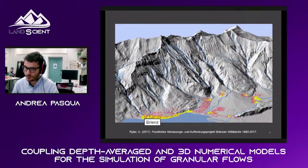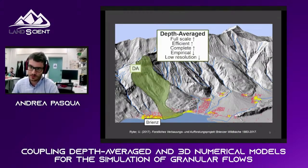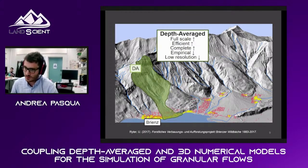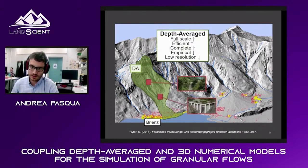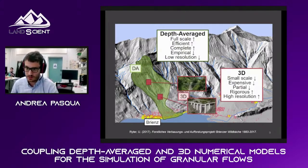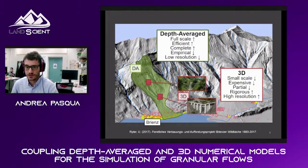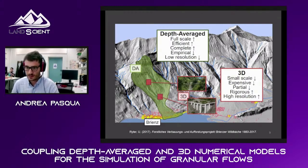To address this issue, we have come up with a strategy. We take the domain and simulate debris flows with a depth-average model, which is very convenient in this case because it can solve large domains very quickly. But when the flow approaches the barrier, flow-structure interaction is studied just in that area with a 3D model. So depth-average models can simulate full scale very efficiently, while the 3D model studies only the flow-structure interaction. This strategy merges the pros of depth-average and 3D models.